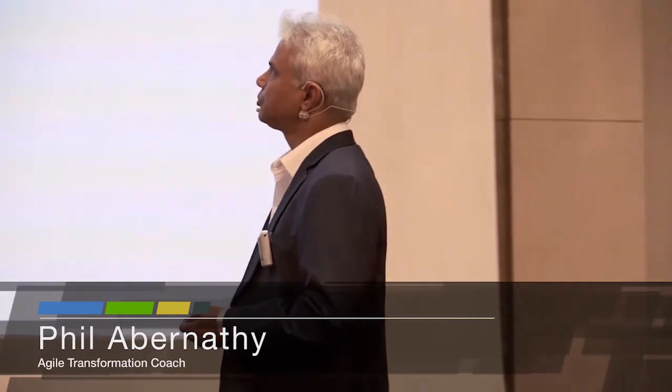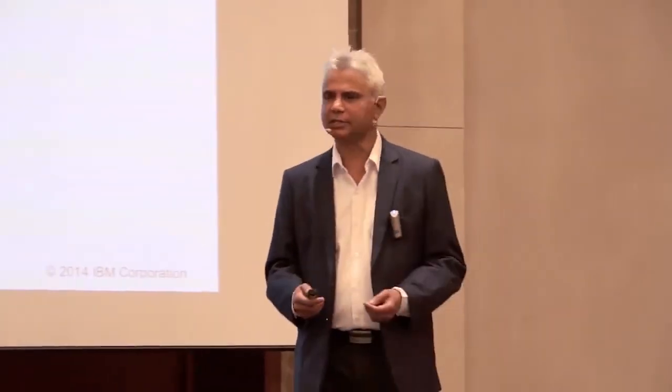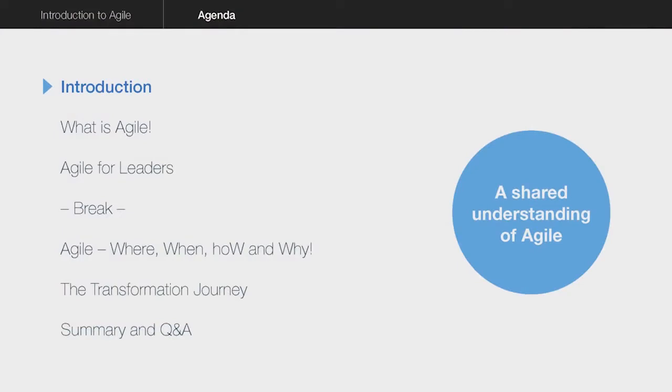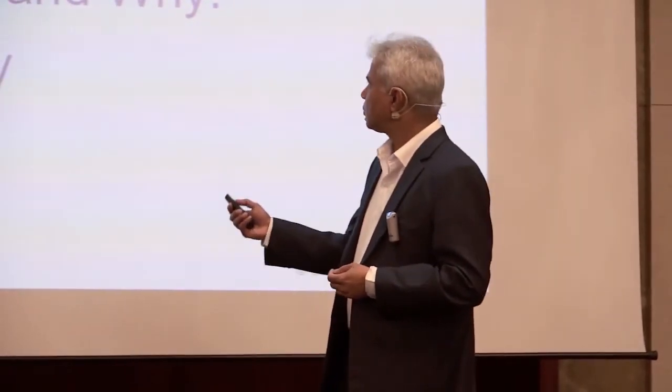Today we're going to learn all about Agile. So what is Agile? Where does it come from? What is it? When, why, where, how to do it as well? You will leave here with more questions than you have right now, but they'll all be different questions, because you'd have answered a lot of questions here today. We'll talk about what is Agile, and then we'll take you a level up to what is Agile for leaders, not just for the teams. What are the complex issues behind Agile? What's the wisdom behind Agile? And then we'll talk about where, when, how and why. We'll talk about the transformation journey. And finally, we'll have a Q&A session.